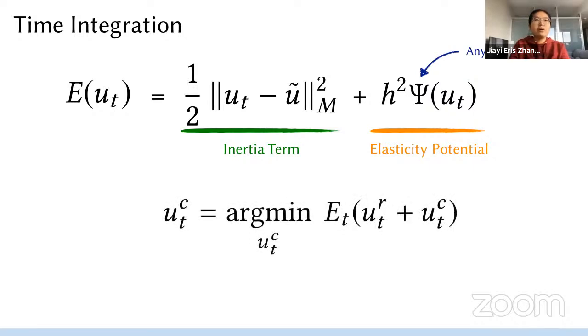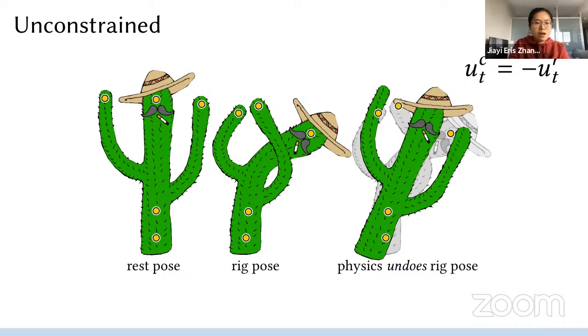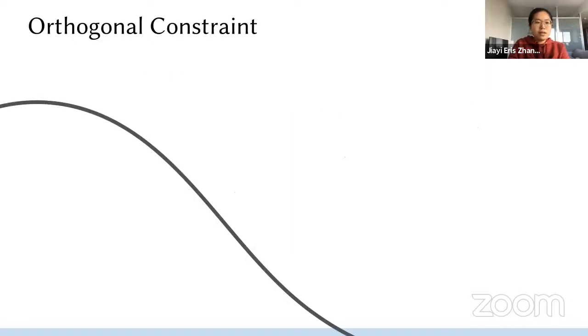And also in our case, if you do change of variable, instead of finding the final displacement directly, we need to find the complementary displacement first. However, if you blindly solve this unconstrained minimization problem, the physics are just so aggressive such that it will completely undo the rig pose.